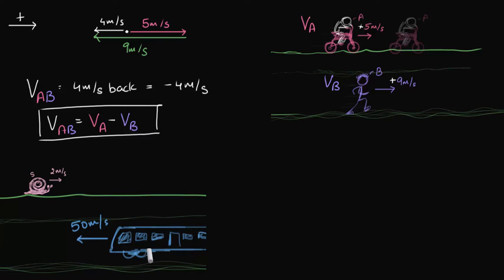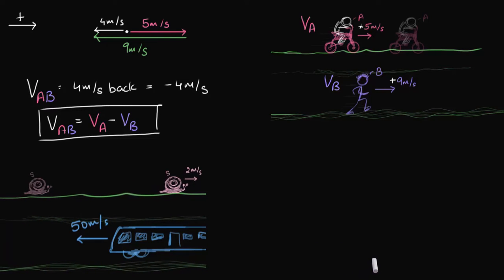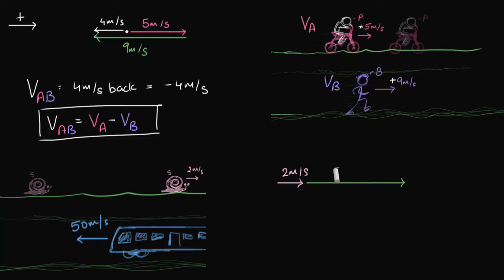Let's do this logically first. The train is traveling towards the left at 50 meters per second. But once you jump into the train, from the train's perspective, the train is not moving — it's at rest. Instead, the whole ground is moving towards the right at 50 meters every second. On that ground, the snail is traveling at 2 meters per second. So in one second, the snail would have traveled 2 meters forward on the ground, and the whole snail and ground would have traveled 50 meters forward.